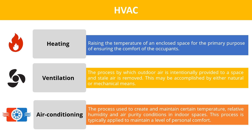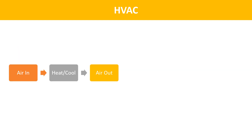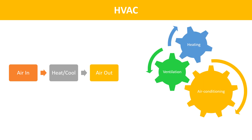Air conditioning is the process used to create and maintain certain temperature, relative humidity, and air purity conditions in indoor spaces. This process is typically applied to maintain a level of personal comfort. An HVAC system takes in air, cools or heats that air, and blows it into an indoor space. The three main functions of an HVAC system are interrelated, especially when providing acceptable indoor air quality and thermal comfort.